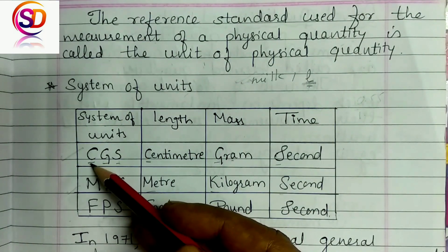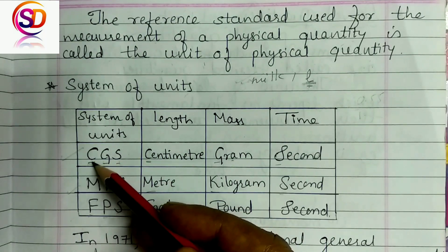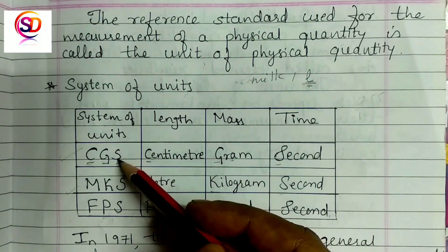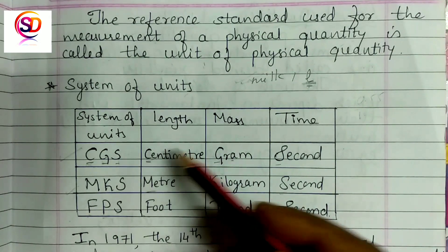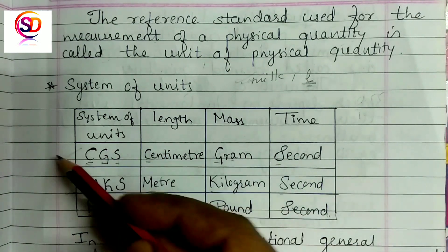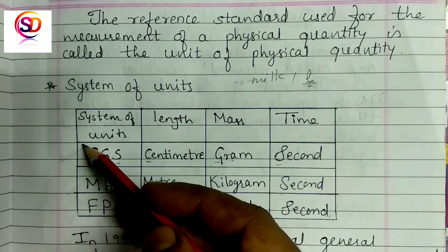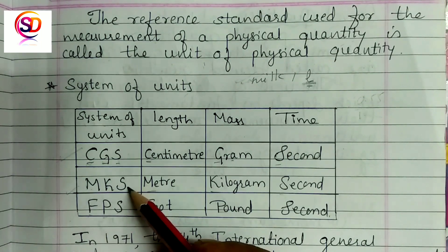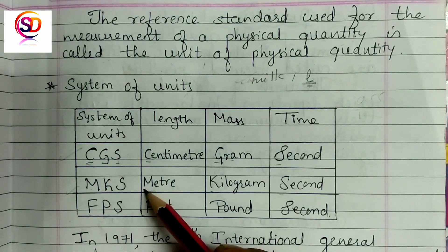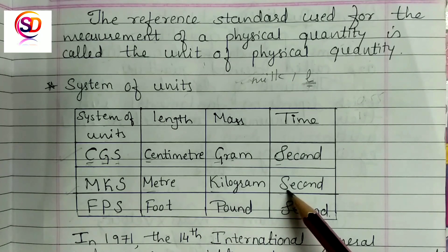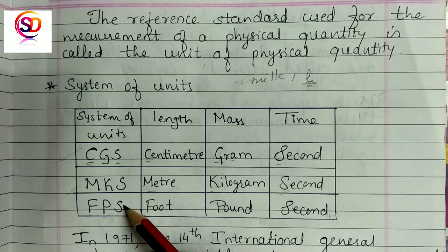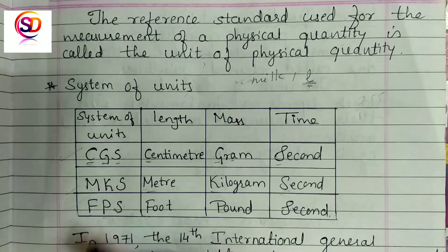For example, in the CGS system: C for centimeter, G for gram, S for second — that is why it is called CGS. In the MKS system: M for meter, K for kilogram, S for second. One more system is FPS: F for foot, P for pound, S for second.